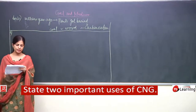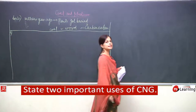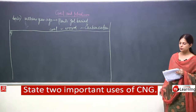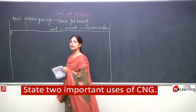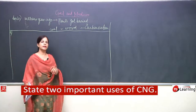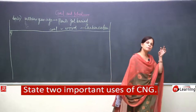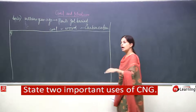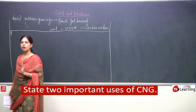Question 21: state two important uses of CNG. CNG is compressed natural gas. It contains mainly methane and is formed due to the decomposition of vegetables under water.